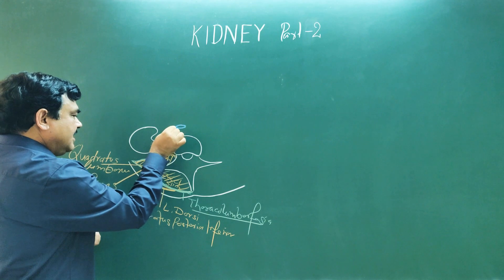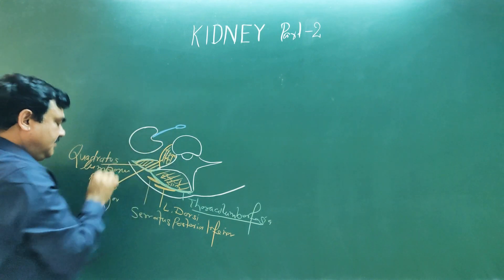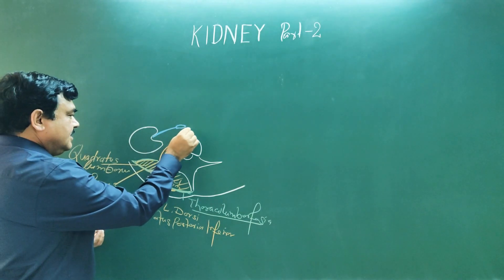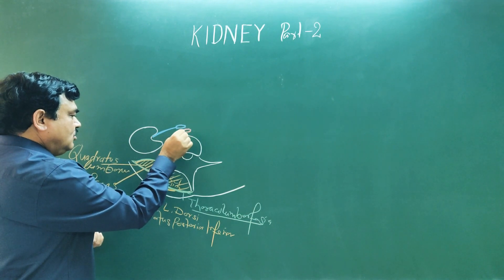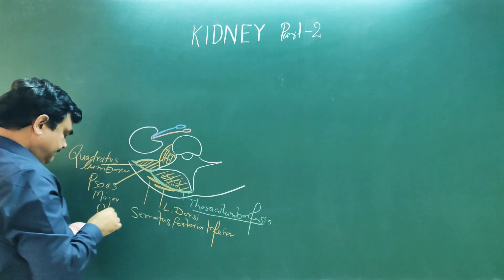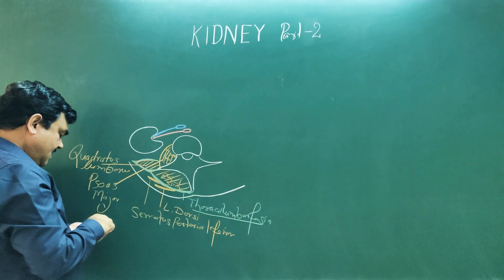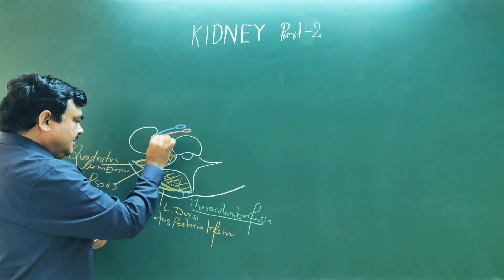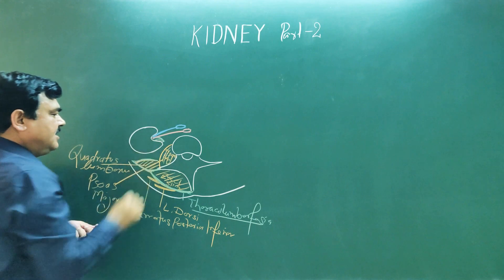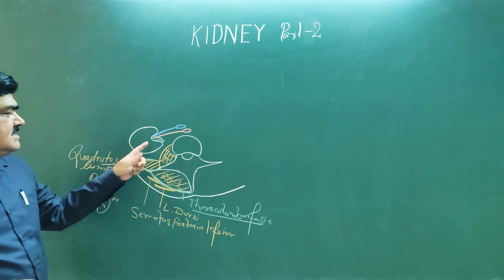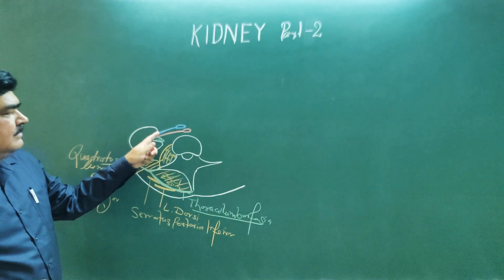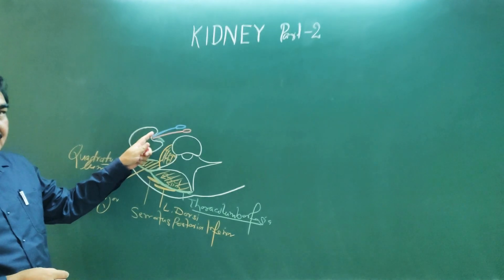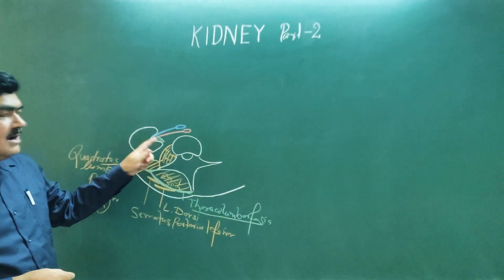This is inferior vena cava. This is renal vein. Here is abdominal aorta. This is renal artery. And here is renal pelvis. So renal pelvis. From anterior to posterior side, we see the structures present at the hilum: renal vein, renal artery and renal pelvis.